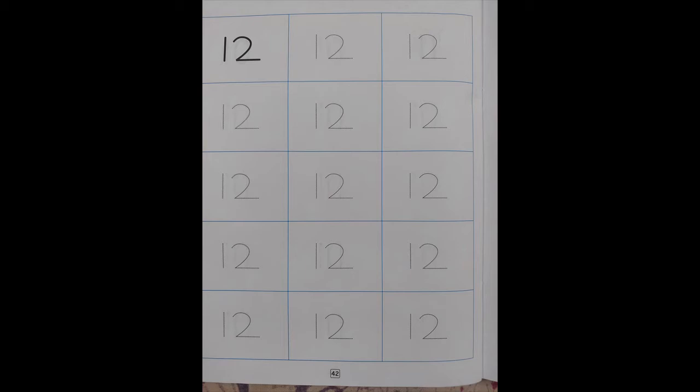Page number 42. Page number 42. In this page you are going to trace the number. You are going to trace the number children very very neatly. You are going to trace. Don't go beyond the dots. After that you need to turn to the page 52.